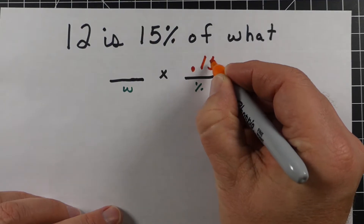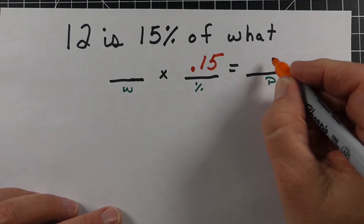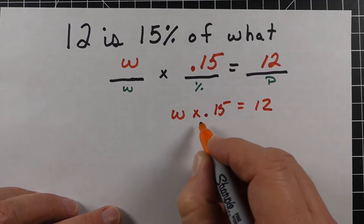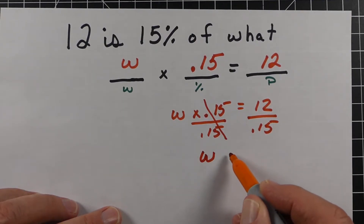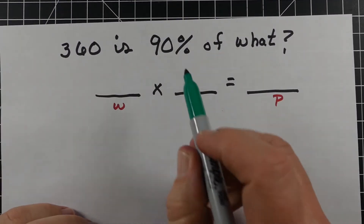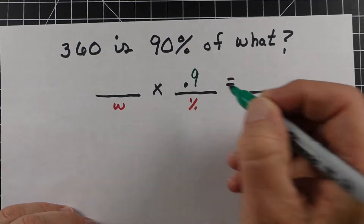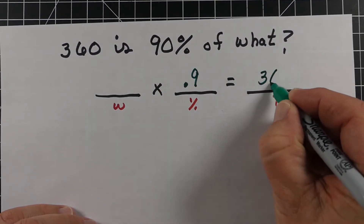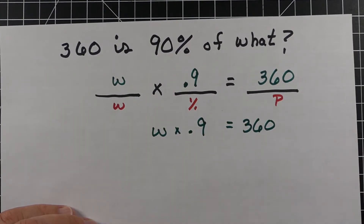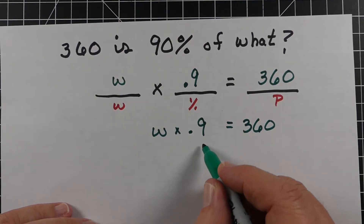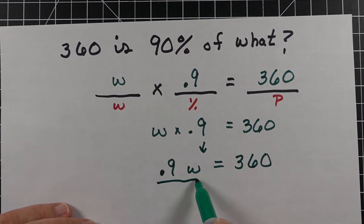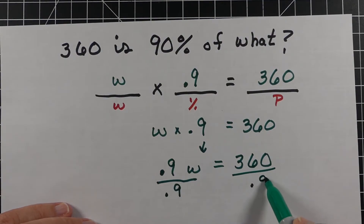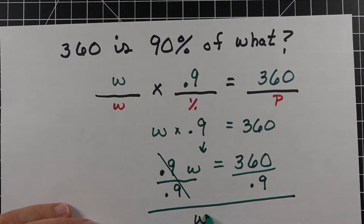Next example: '12 is 15% of what?' We write 15% as 0.15. Since 12 is 15%, it's the part, so we're solving for the whole. We divide both sides by 0.15 and get W equals 80. For the last example, '360 is 90% of what?' — we write it as 0.9W equals 360, divide both sides by 0.9, and get W equals 400. So the whole amount is 400.